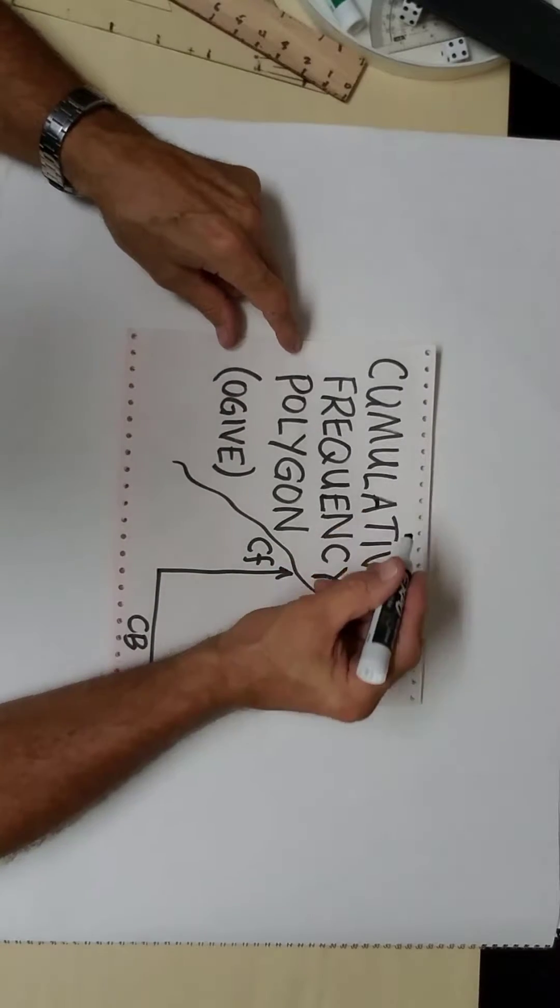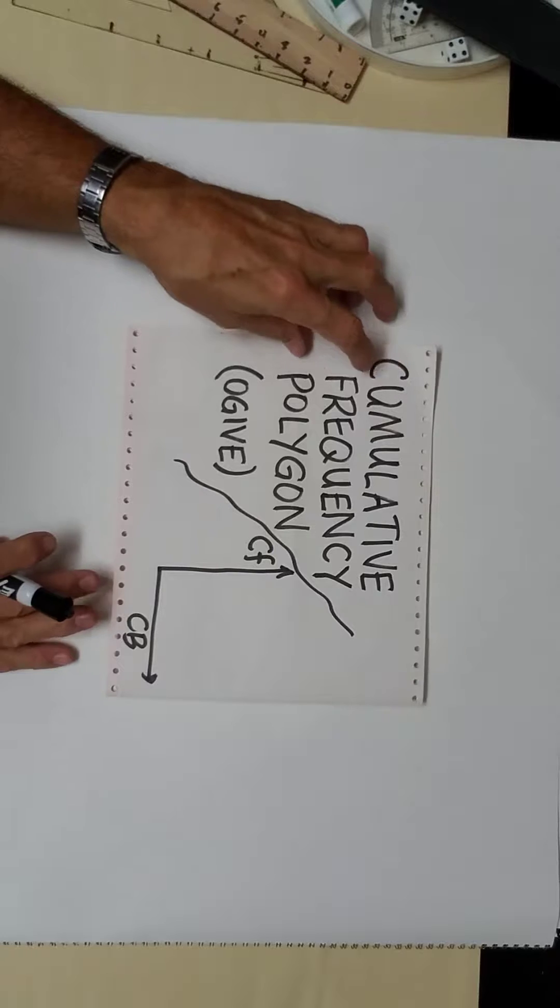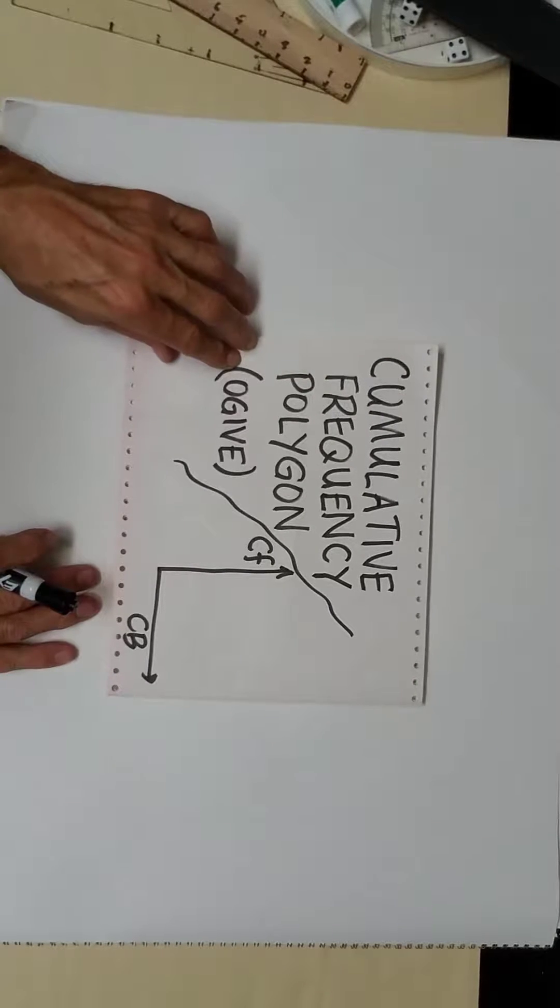The third and final graph that we use or construct based upon a group frequency distribution is called a cumulative frequency polygon, or for short, called an ogive.